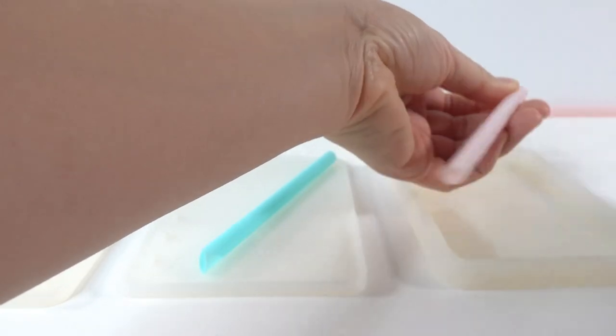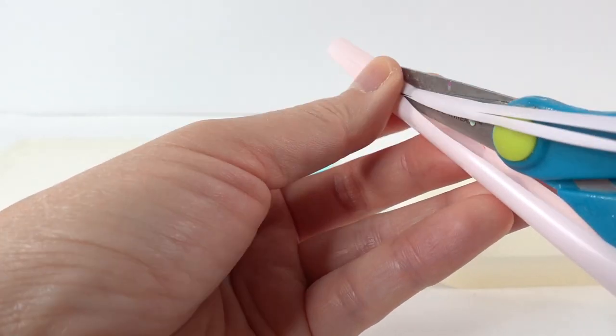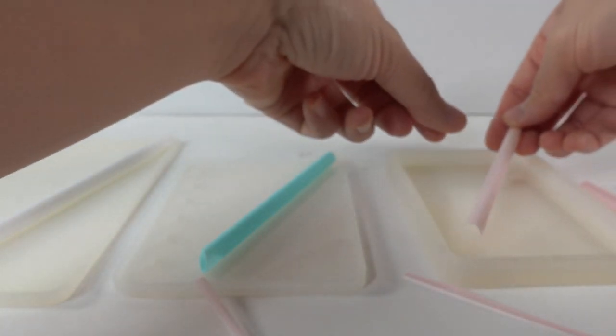For the photo holder, I want the surface to be flat so we want to embed the entire straw into the mold. To do that, I'm cutting the straw in half so that it has a smaller profile.